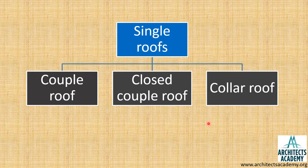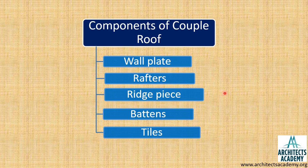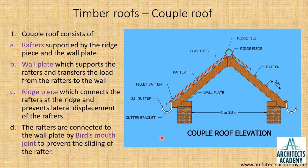Single roofs themselves are divided into three parts: couple roof, closed couple roof, and collar roof. We'll be learning about all three types in this presentation. This particular presentation is part one, which deals with the couple roof. Let us first see the components of the couple roof. The components are: wall plate, rafters, ridge piece, battens, and ties.